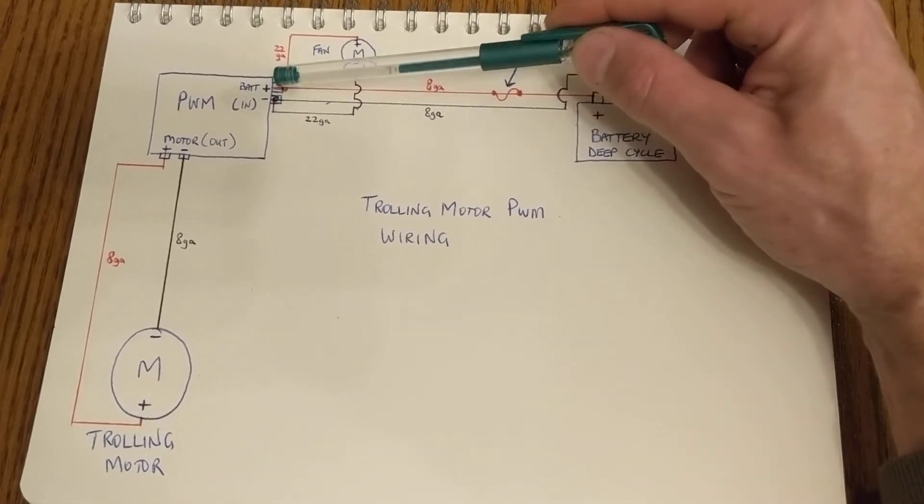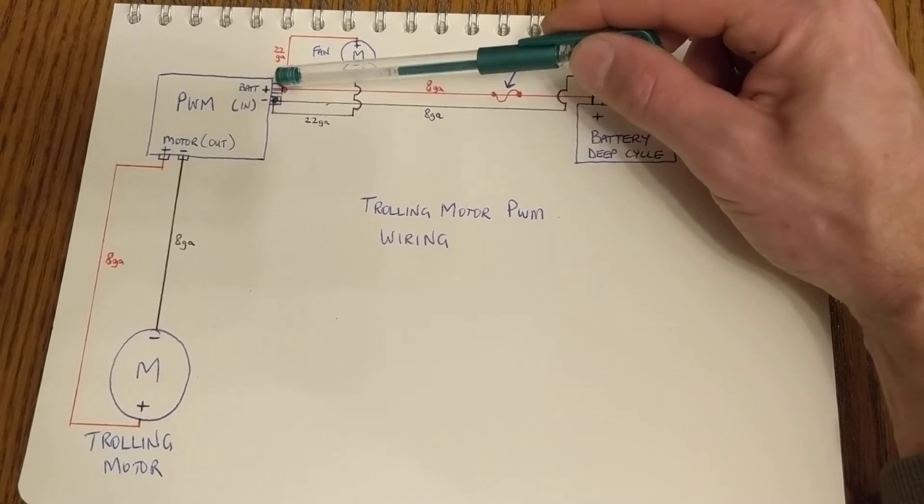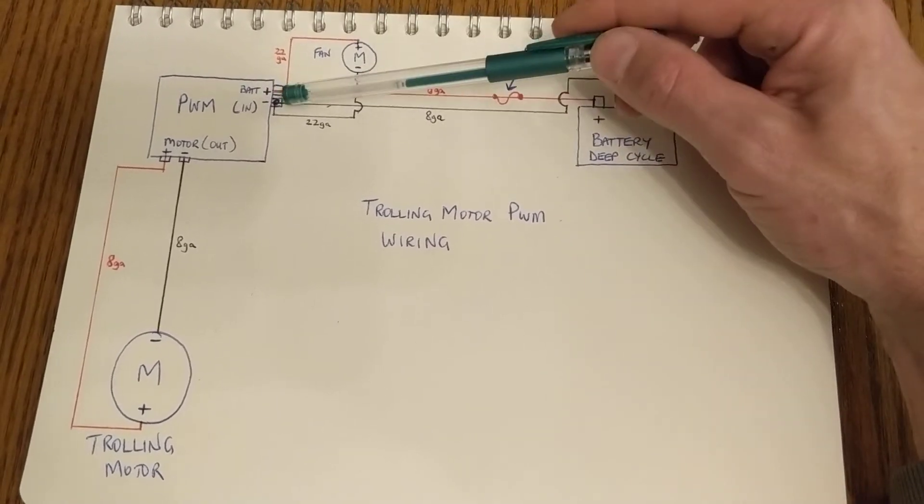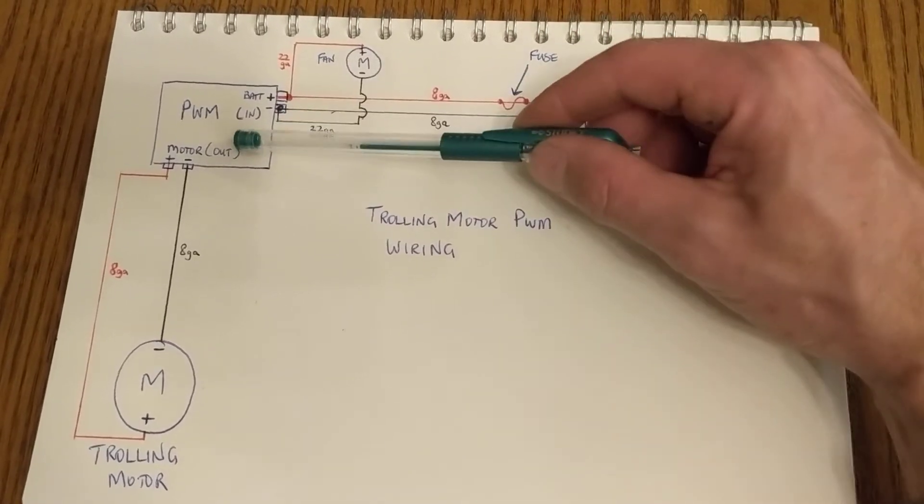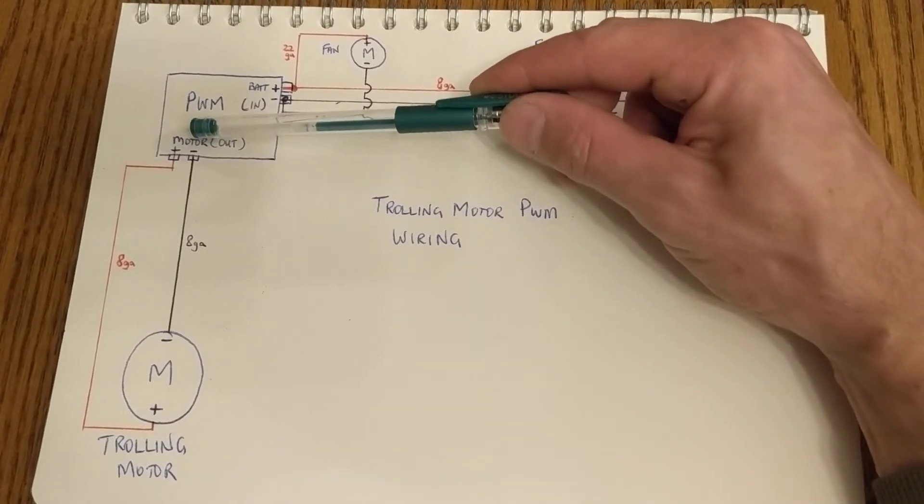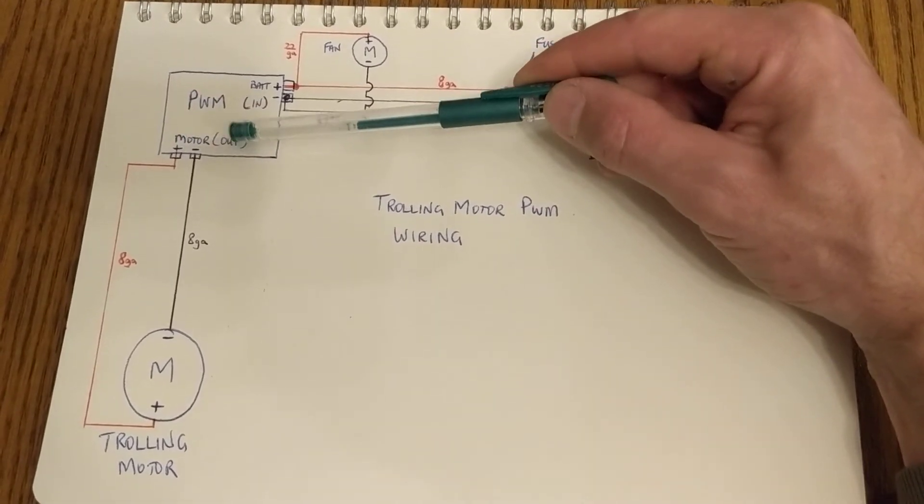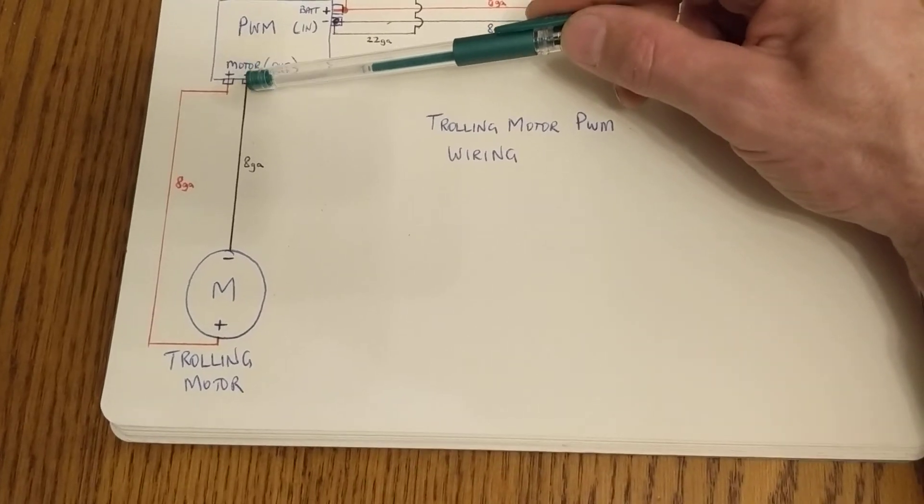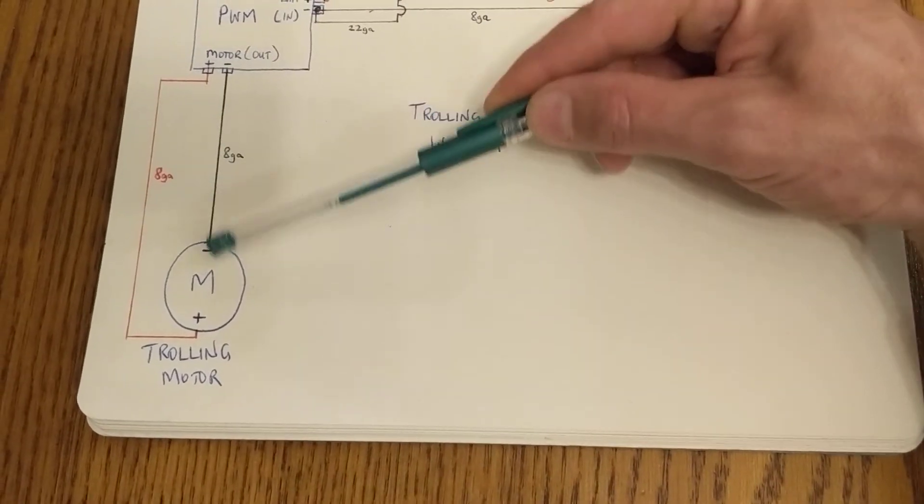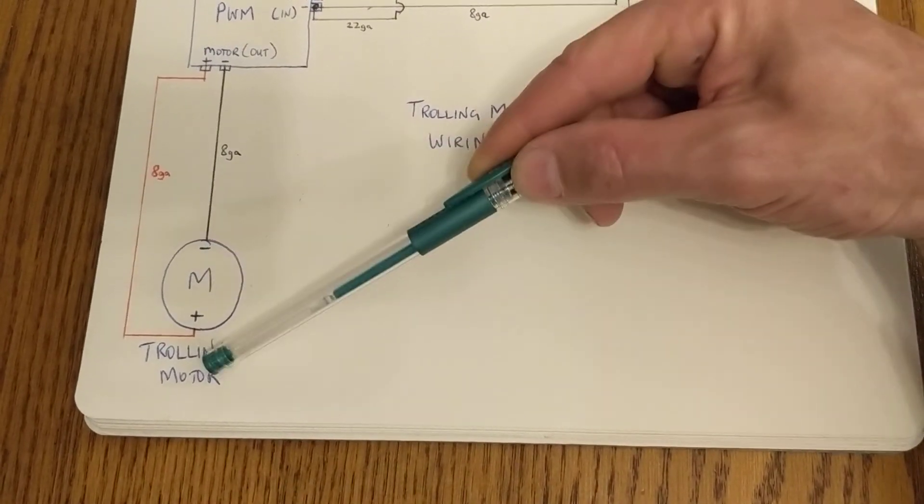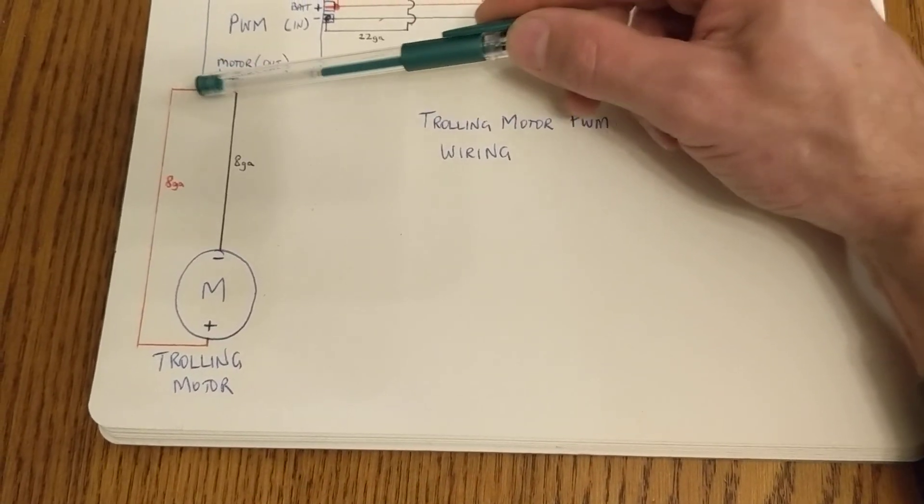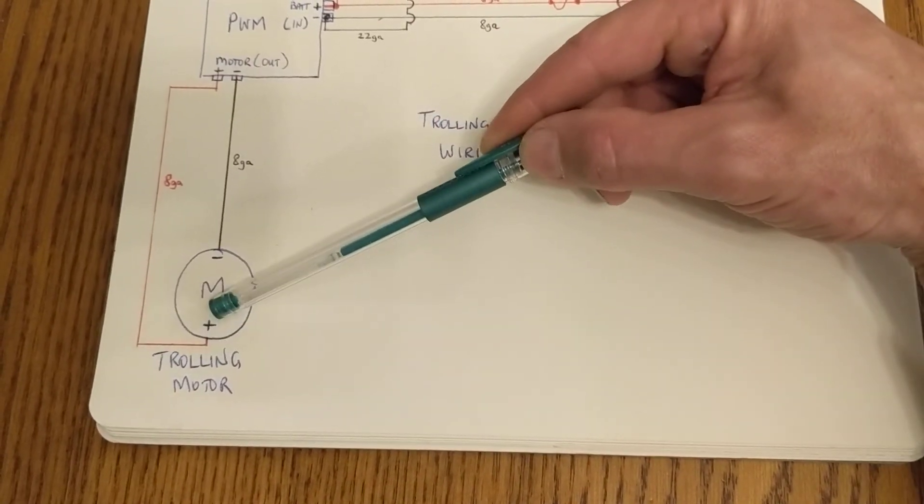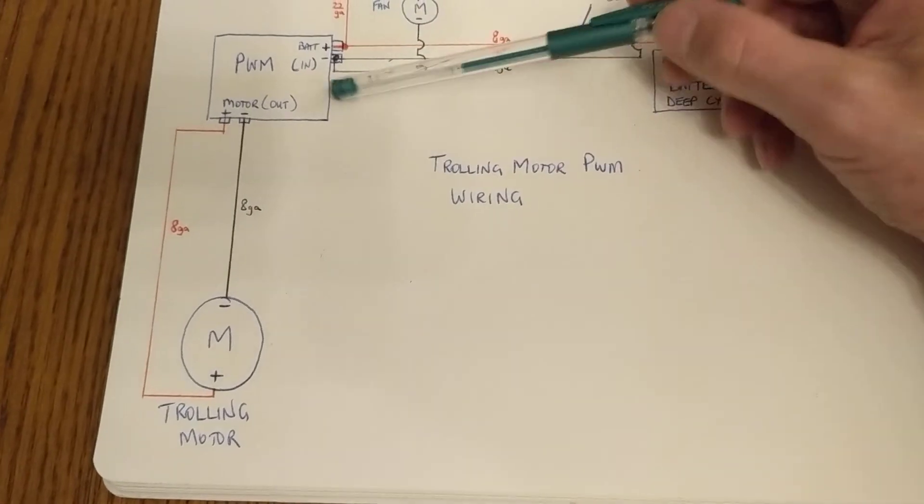So these just run in underneath the mounting posts I guess on the PWM, and then from there the motor or the outside of the PWM, those wires same thing, negative goes to the negative of your trolling motor and then the positive same thing goes down to the positive of the trolling motor, and that's it.